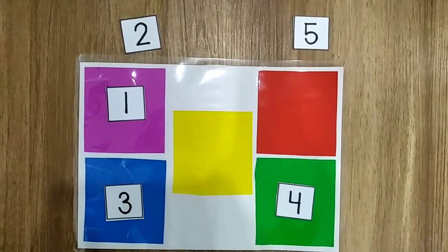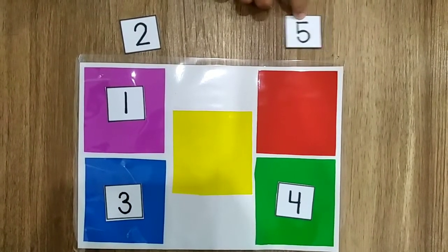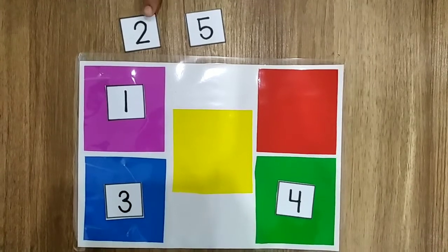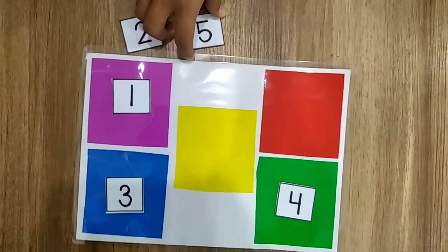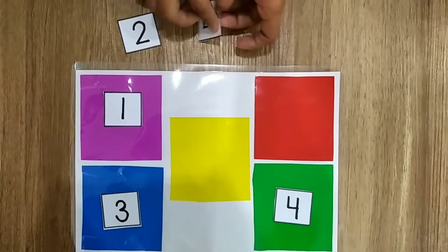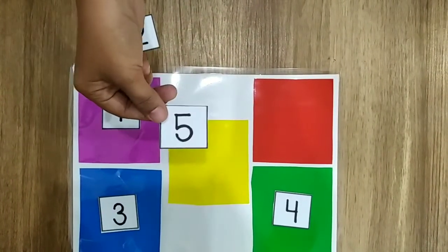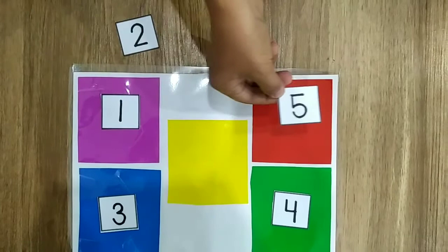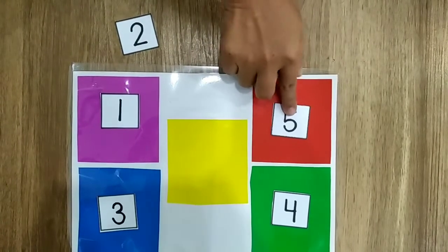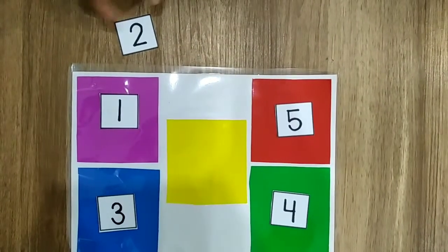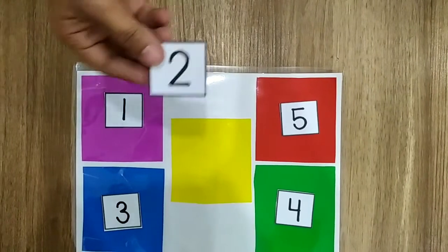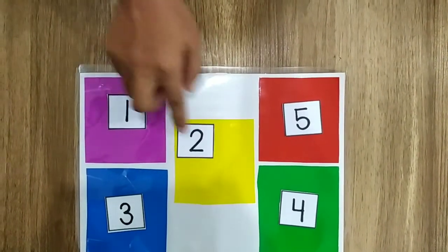Now find number five. Which one is number five? Yes, this one is number five. Put it on the red square. Yes, five on the red square.